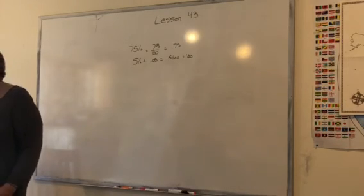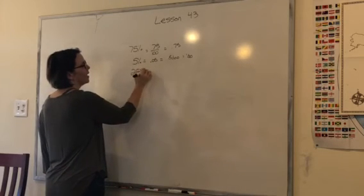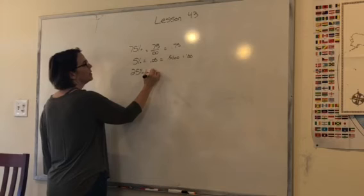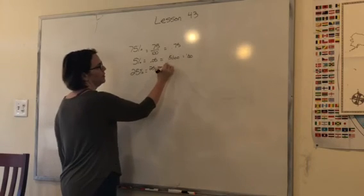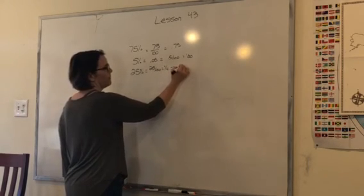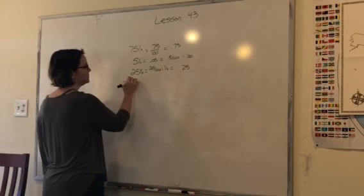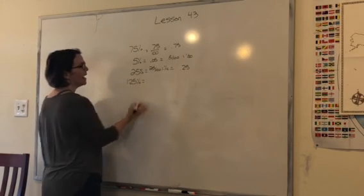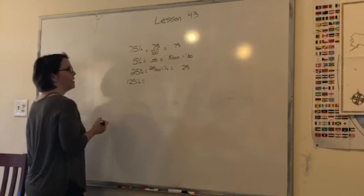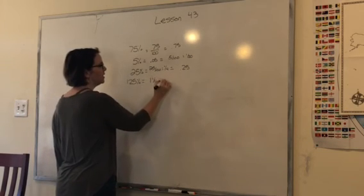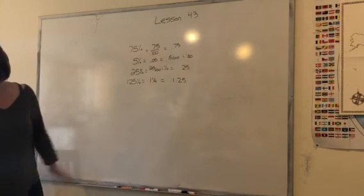So if I said 25%, I can write it as 25 over 100, and the decimal would be 0.25. 125%. How would you write that as a fraction?